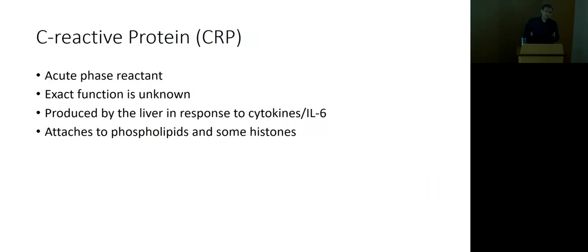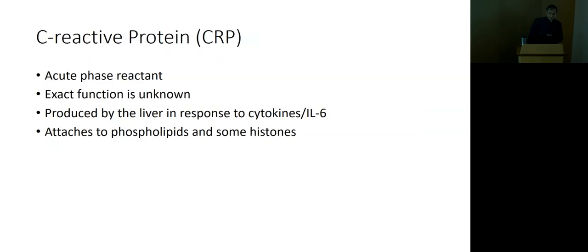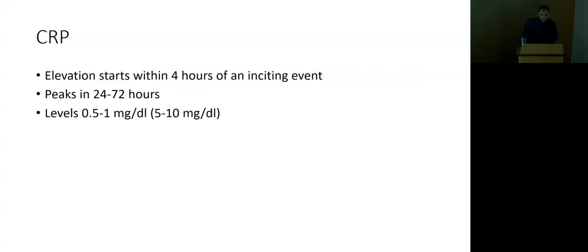Another test we use a lot is C-reactive protein. It's an acute phase reactant itself and provides a more direct measurement of inflammation. Its exact function is unknown, but it's produced by the liver in response to cytokines, particularly IL-6, and works by attaching to phospholipids and some histones. Elevation starts within four hours of an inciting event — it's an early starter — and the highest level is usually achieved within 24 to 72 hours. Normal ranges vary by lab: either 0.5–1 or 5–10, depending on the units used.